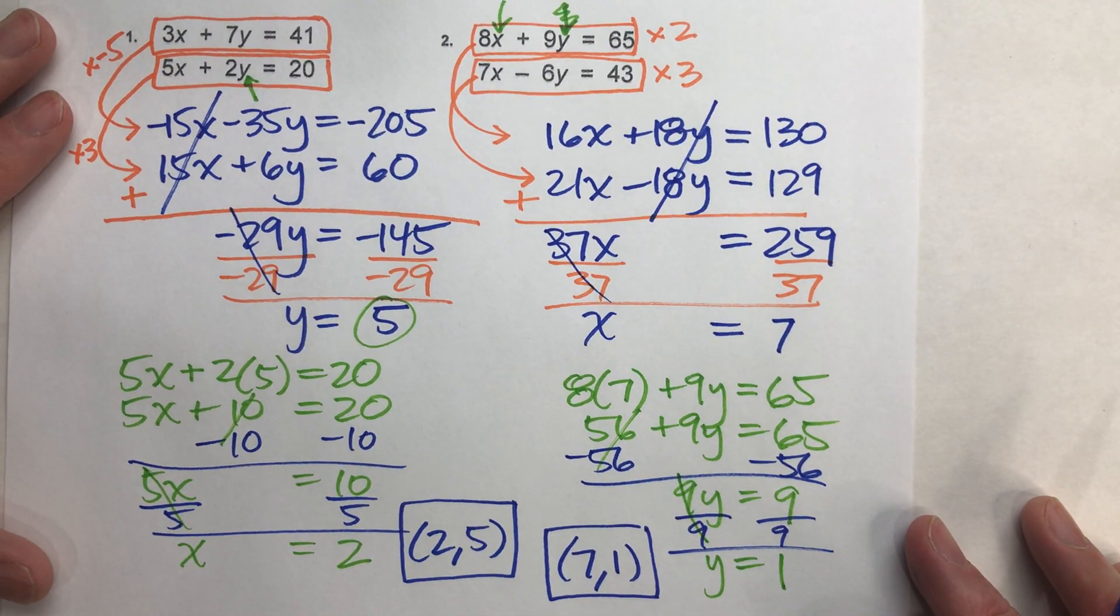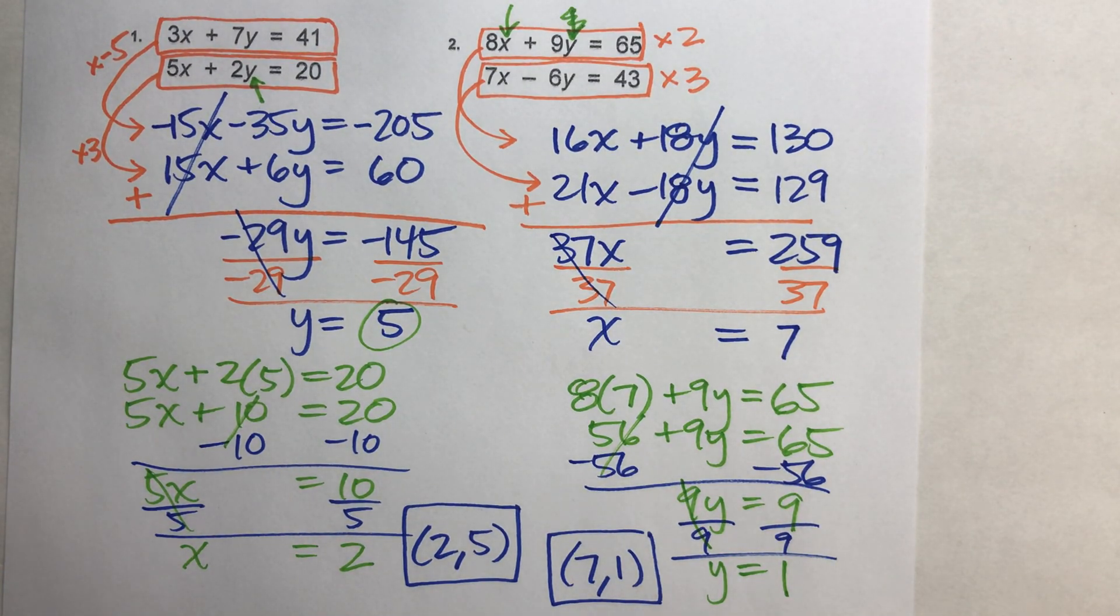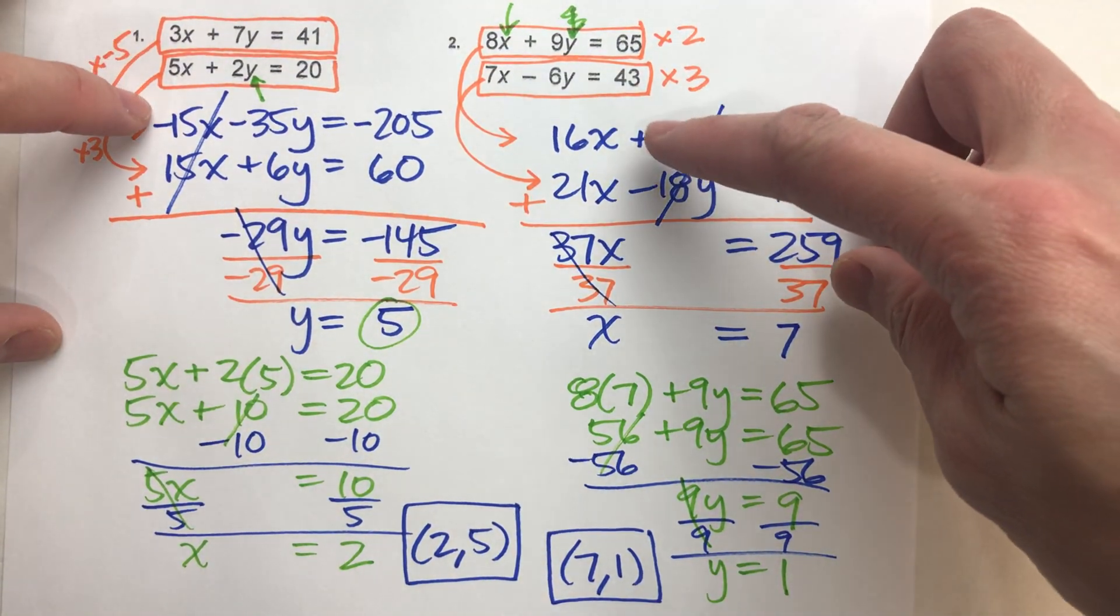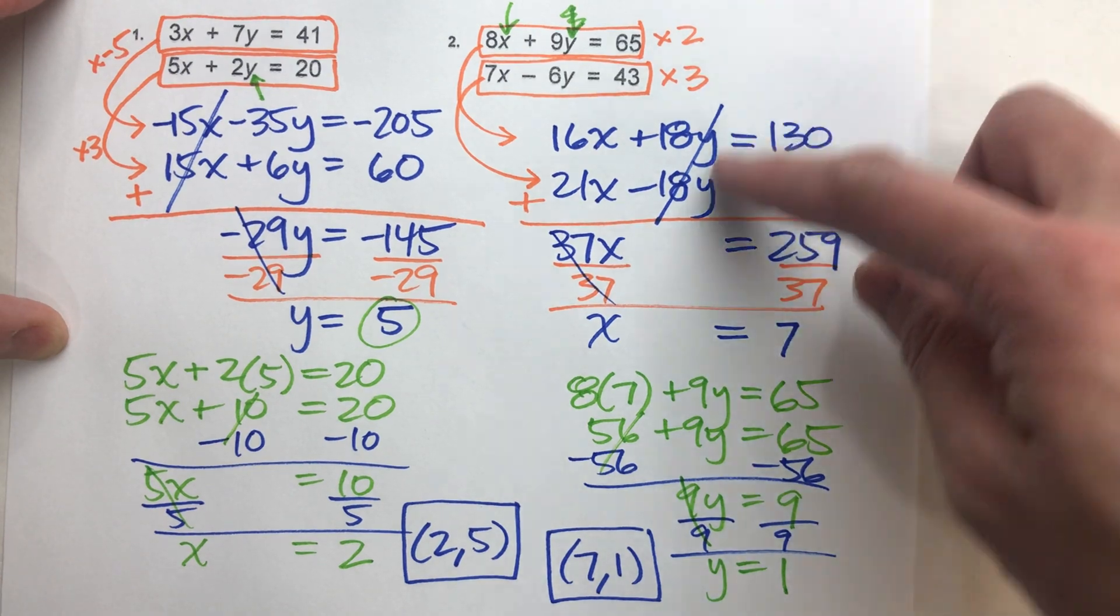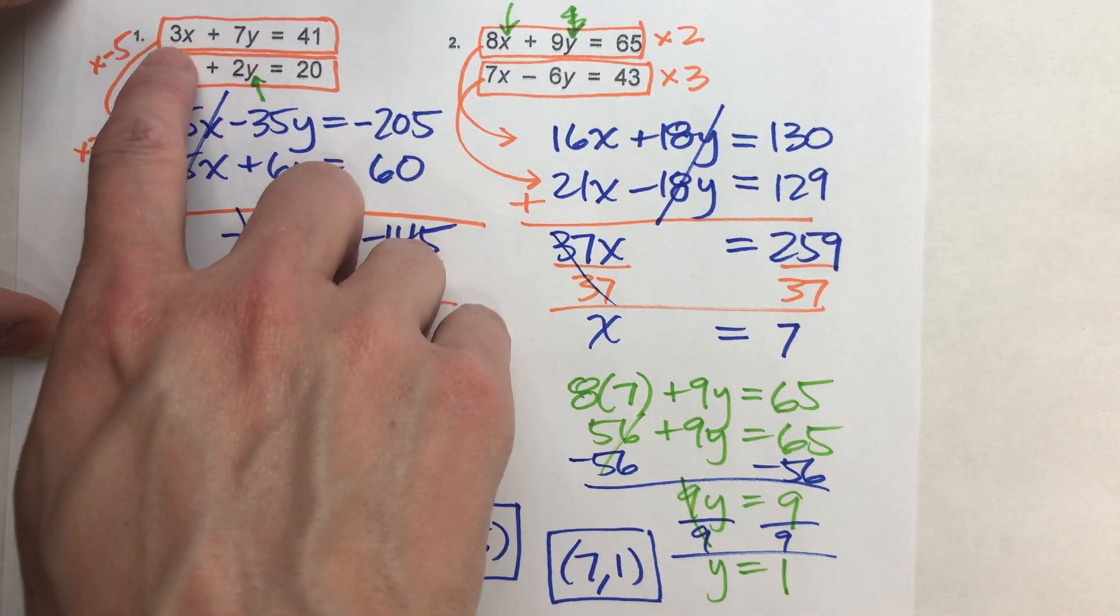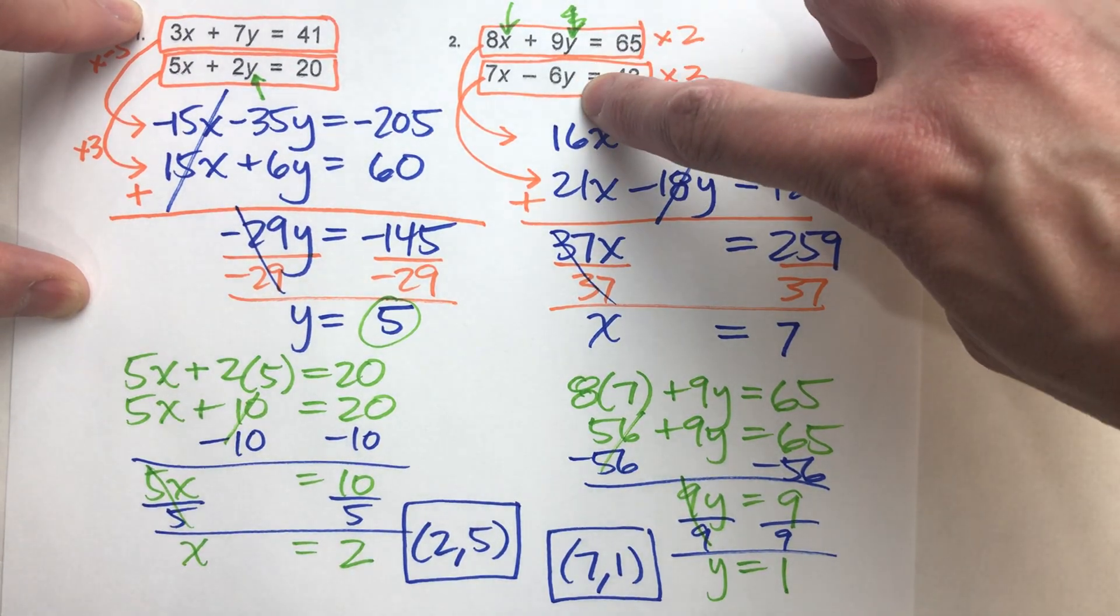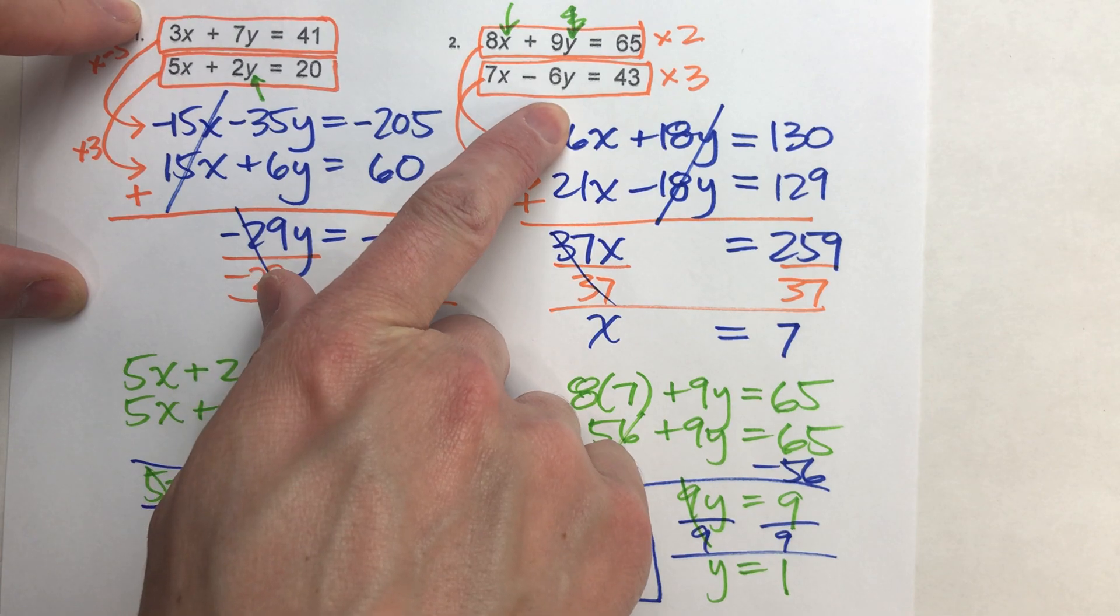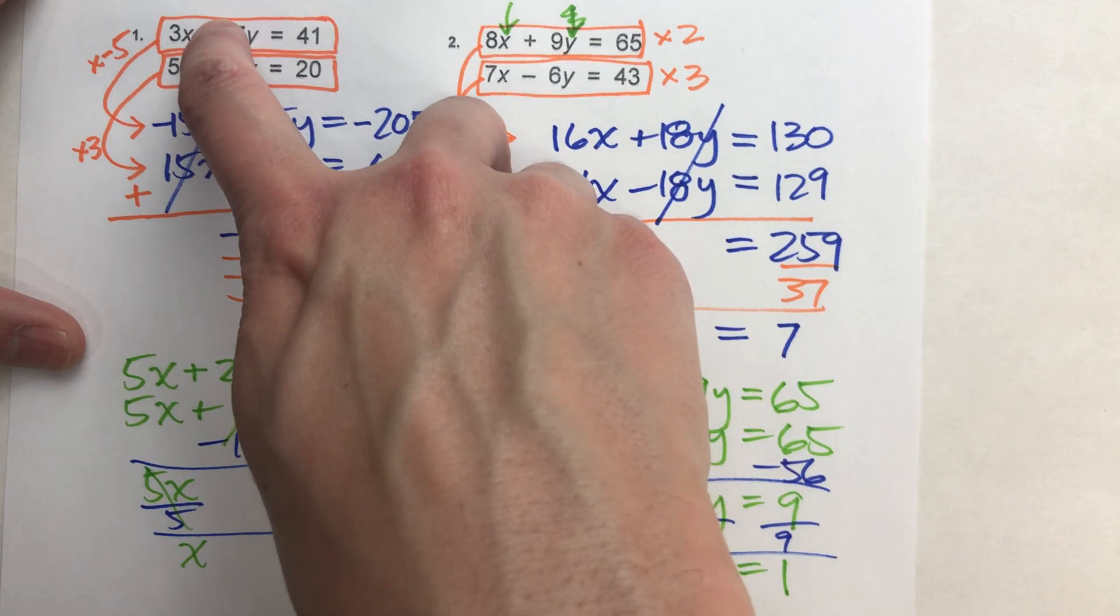So there you have it. Really, the key to this whole thing is kind of planning ahead. So that way, you can either match up your x's or match up your y's and then eliminate them. Look for common multiples. Sometimes you get lucky and there's an easier common multiple. But if there isn't a common multiple that's a little bit smaller, you might have to just multiply it by the bigger number. 3x times 5 and 5x times 3 to get your x's to match up.